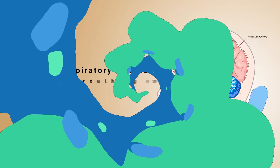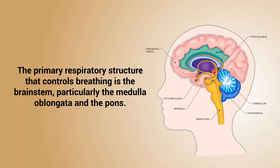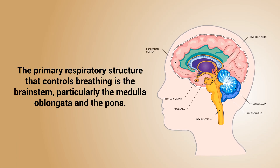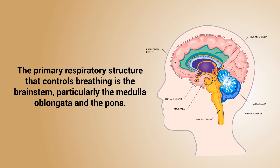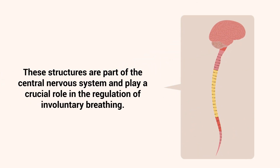The primary respiratory structure that controls breathing is the brainstem, particularly the medulla oblongata and the pons. These structures are part of the central nervous system and play a crucial role in the regulation of involuntary breathing.